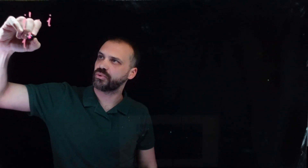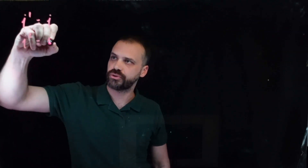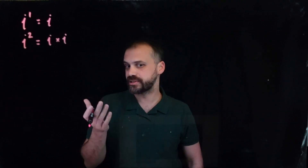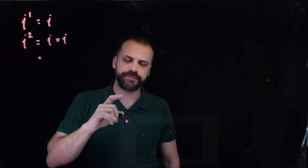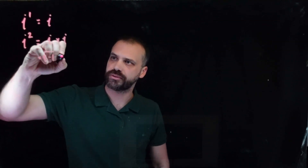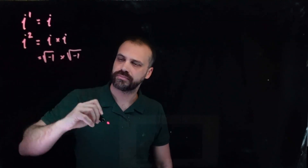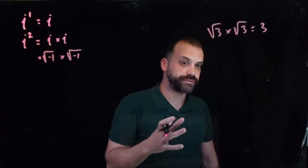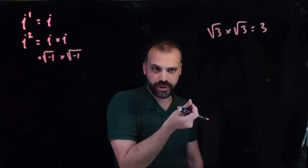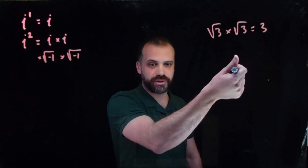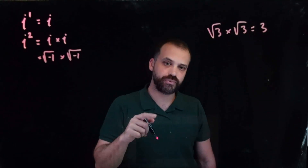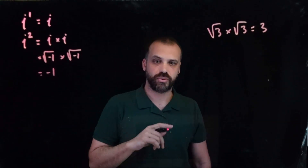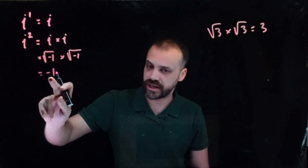What about i squared? Well, that's equal to i times i — that's what squared means, multiplying something by itself. Now, what's i again? Well, our definition is the square root of negative 1. The square root of 3 times the square root of 3 is 3, because that's the definition of the square root — the number when multiplied by itself. So the square root of negative 1 times the square root of negative 1 is negative 1. So i squared equals negative 1.